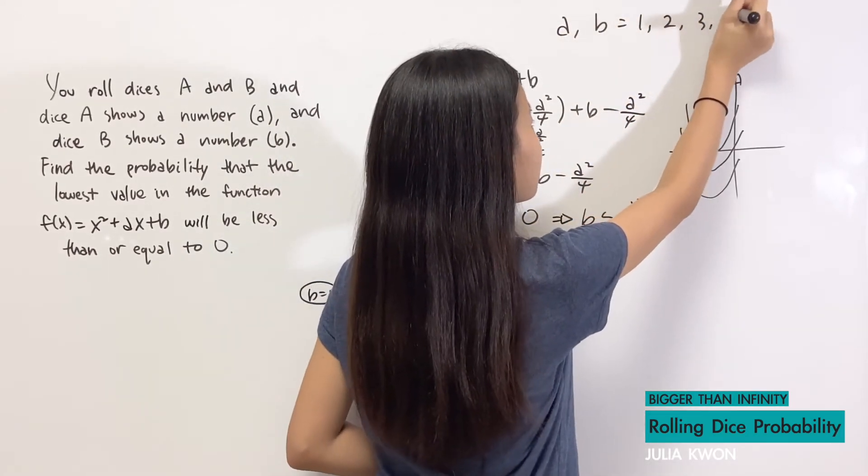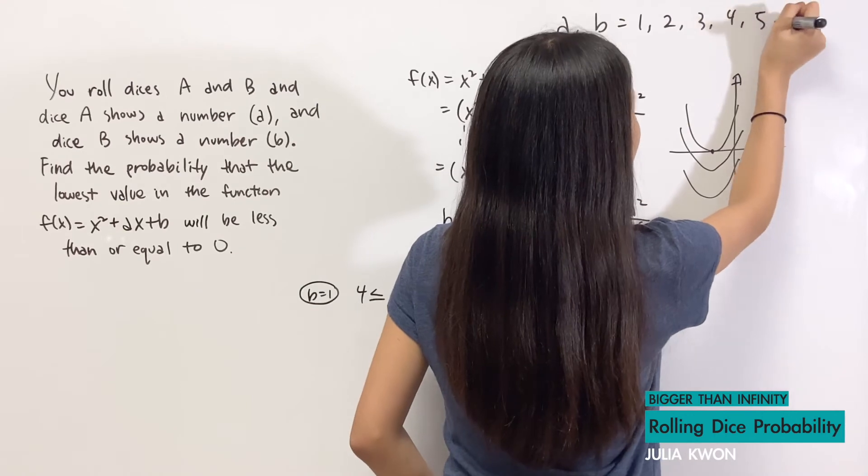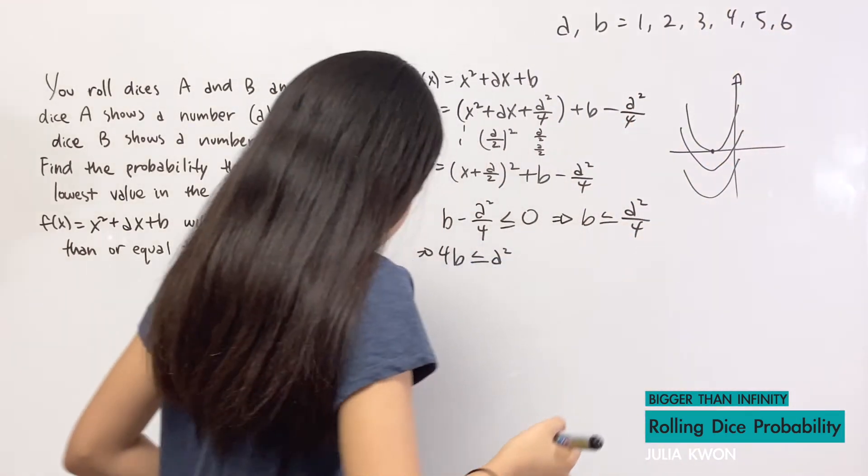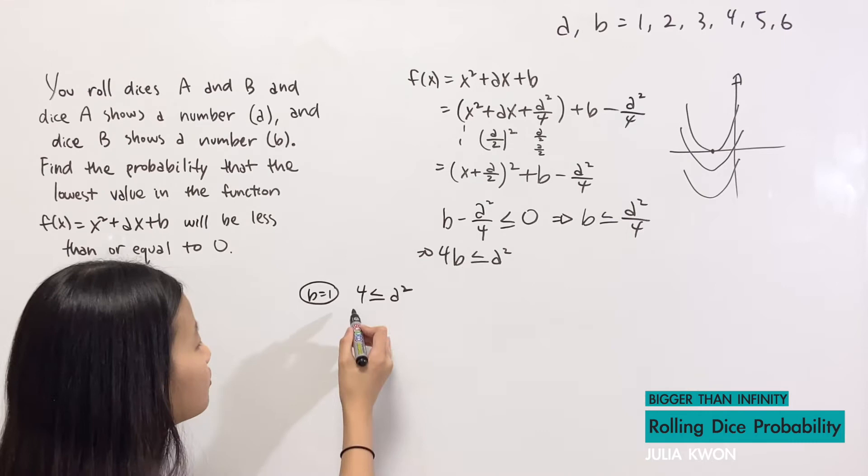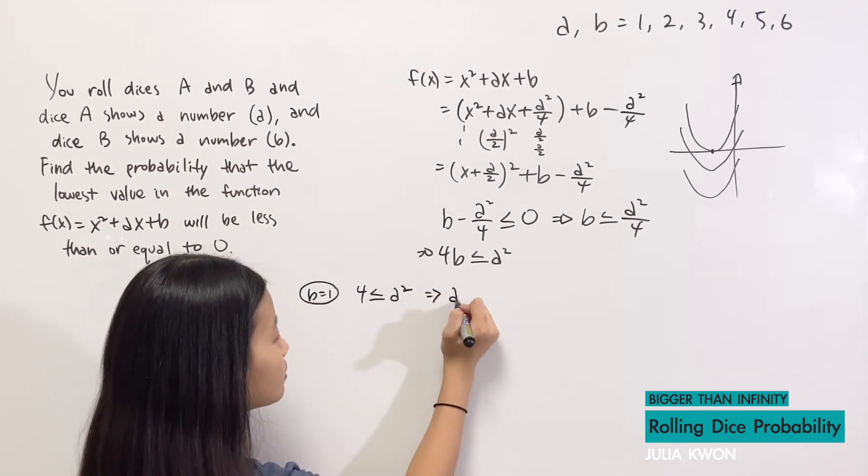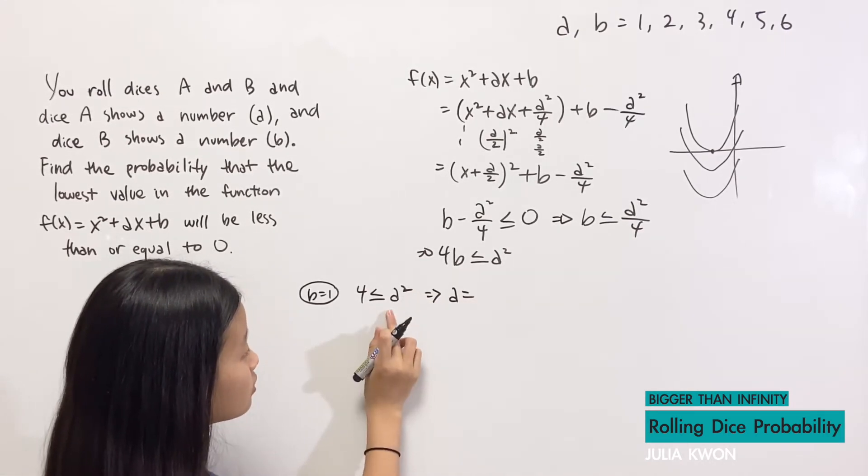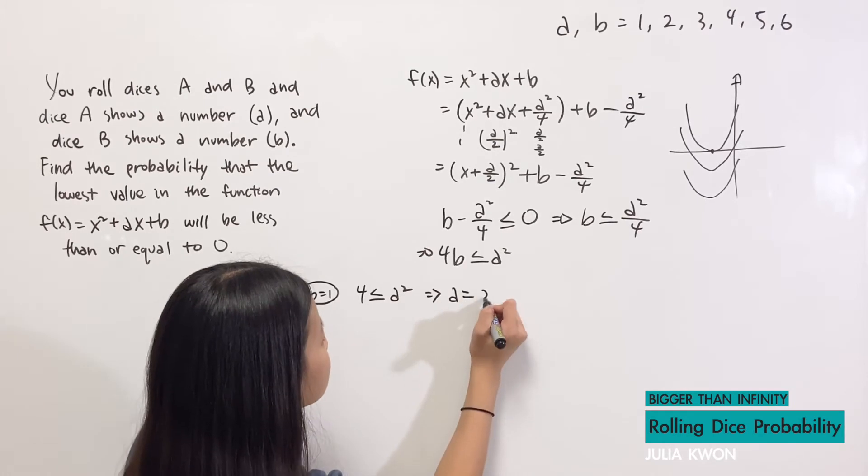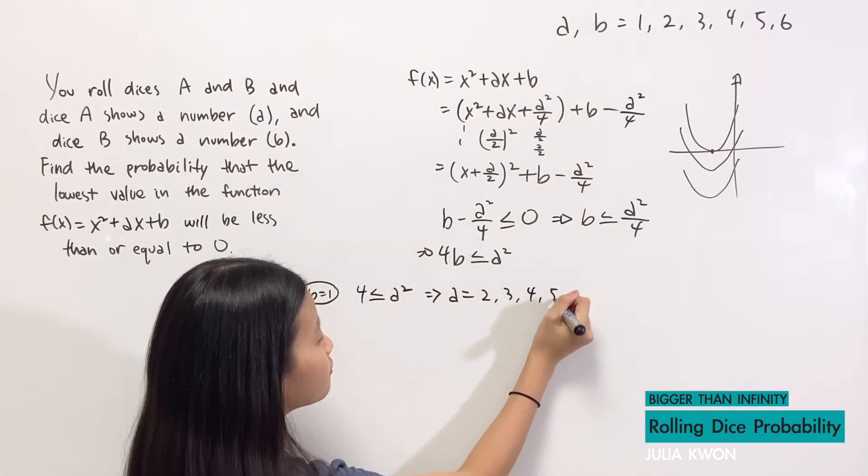And so that means that a can only equal, for this to be true, 2, 3, 4, 5, or 6.